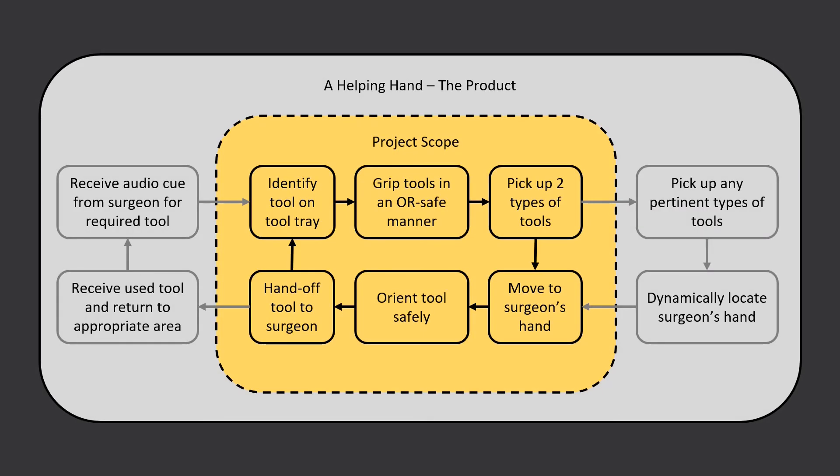A helping hand has demonstrated the potential to be viable within the operating room. To help get it there, some additional functionality would be required, including the addition of surgeon audio cue processing, increased range of compatible tools, dynamic mapping of the environment, and the ability to return used tools. It is also imperative that the product is demonstrated to surgeons and their feedback is incorporated to iteratively improve the product.